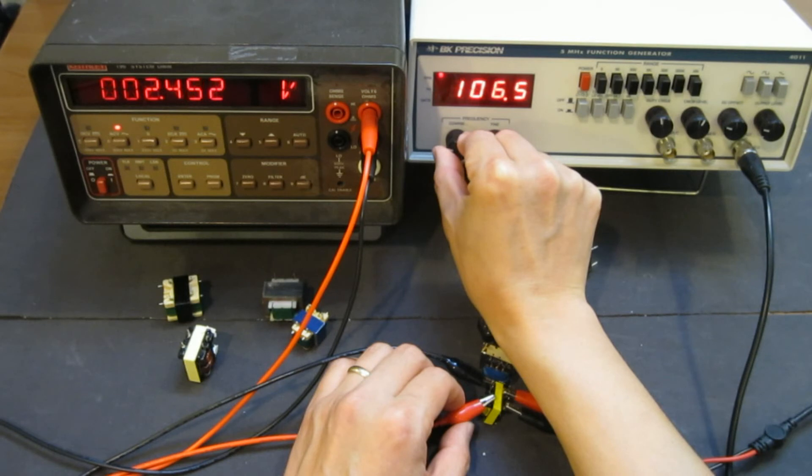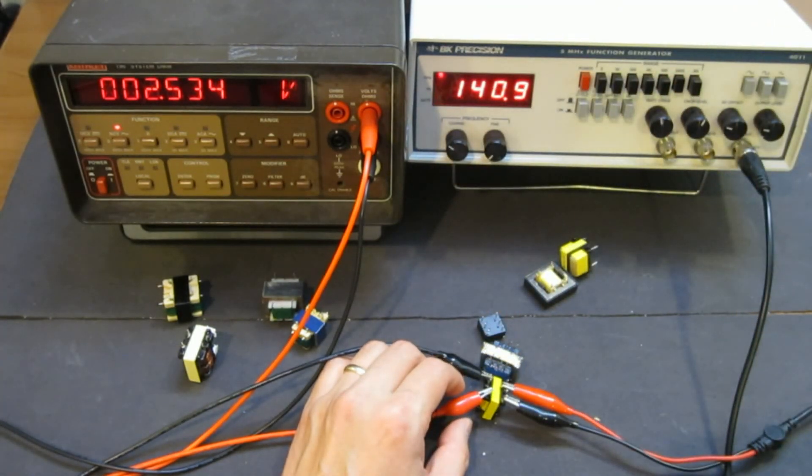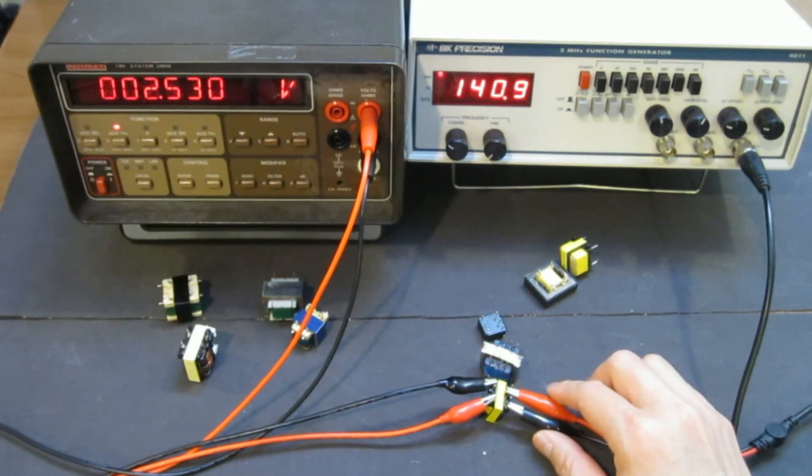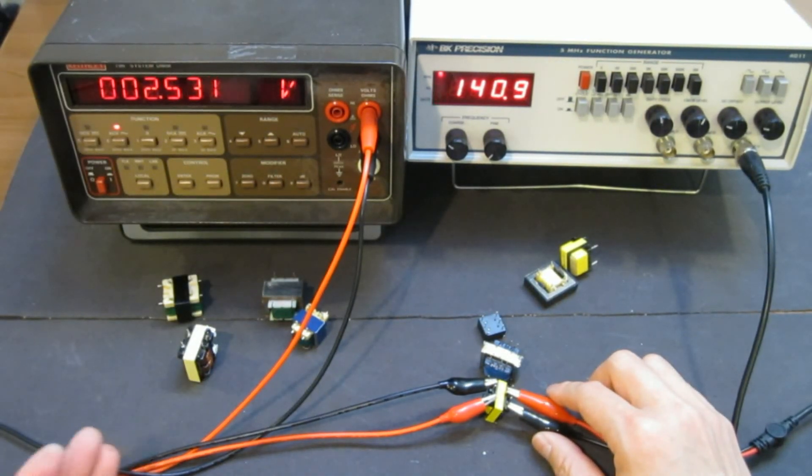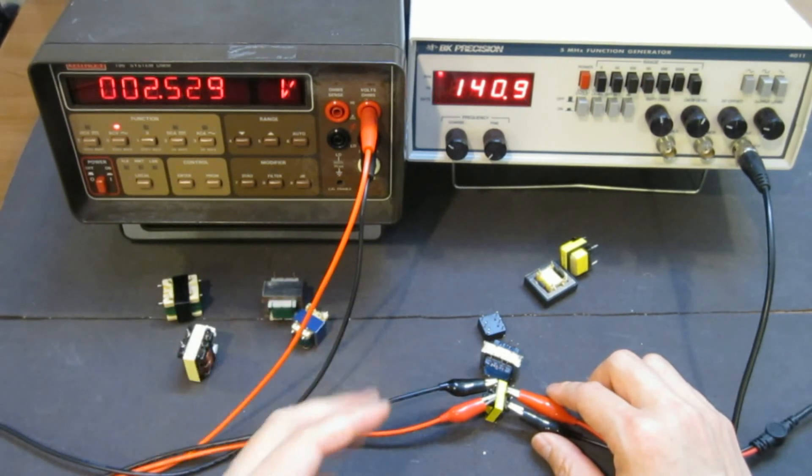So as you can see right now, we're at 130, 140, 150 kilohertz. And then after that, the output started dropping. But again, as I mentioned earlier, for this meter, we have 100 kilohertz guaranteed bandwidth. So I'm not sure what the response is after that.